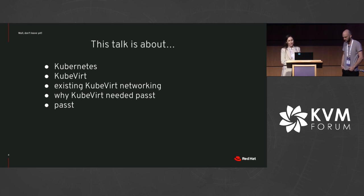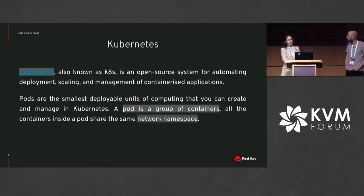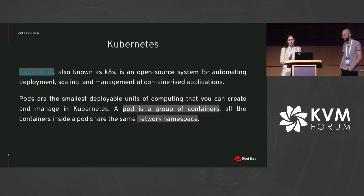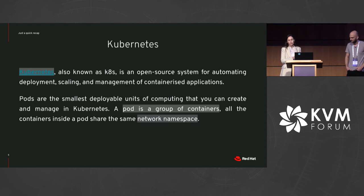So what is Kubernetes? Kubernetes is an open source system used to automate the deployment, scaling, and management of containerized applications. The smallest deployable and executable unit that Kubernetes has is called a pod. A pod is basically a group of containers that share resources. From the network perspective, a pod is a group of containers that share the same network namespace.